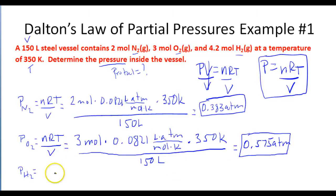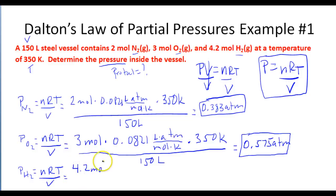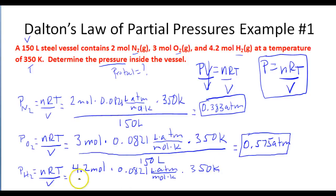Now we calculate the pressure that the hydrogen gas will exert, using the same formula NRT over V. The number of moles of hydrogen is 4.2 moles times 0.0821 L·atm/(mol·K) times 350 K, divided by 150 liters. Taking 4.2 times 0.0821 times 350, divided by 150, we end up with 0.805 atmospheres.